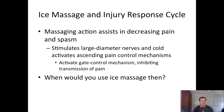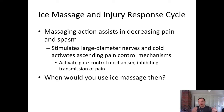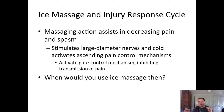When would you use ice massage? Not on someone who just tore their ACL — that's an intra-articular injury. Probably not on an acute ankle sprain either, for similar reasons. Ice massage is best used for strains and contusions — well-localized soft tissue injuries. For example, a localized hamstring strain, getting hit by a pitch in baseball, or taking a knee to the quad during soccer.